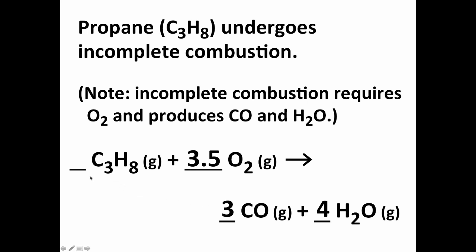And so the solution to that, of course, is we just multiply everything by two. Two times one is two. Two times 3.5 is seven. Two times three is six. And two times four is eight. And now we have both mathematically a correct equation, but also chemically, where all of our molecules are whole molecules.